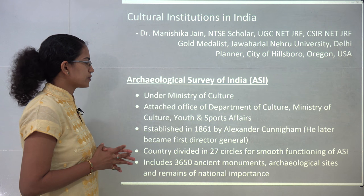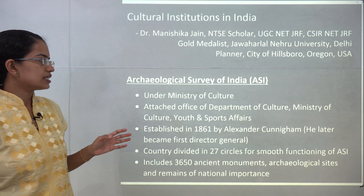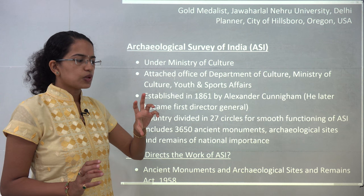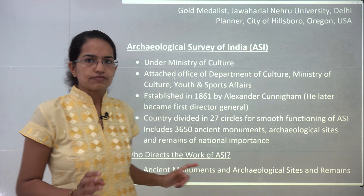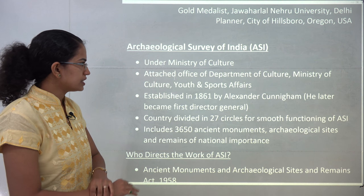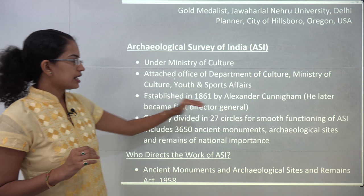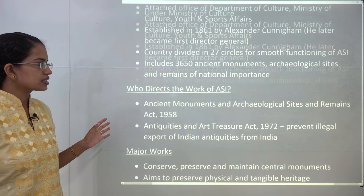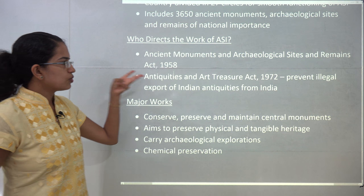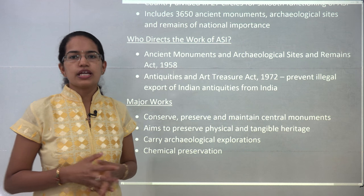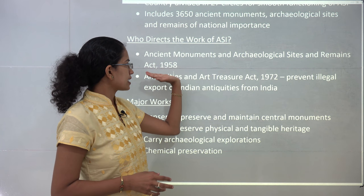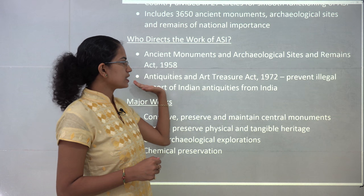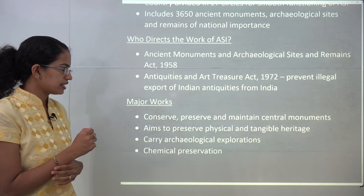The first topic is the Archaeological Survey of India. As the name suggests, the archaeological survey deals with ancient remnants. The ASI comes under the Ministry of Culture. It was established in 1861 by Alexander Cunningham, who divided India into 27 circles with 3,650 ancient monuments. There are two acts directing the work of ASI: the Ancient Monuments and Archaeological Sites Act 1958, and the Antiquities and Art Treasures Act 1972. The Antiquities Act prevents any illegal export of Indian antiquities.